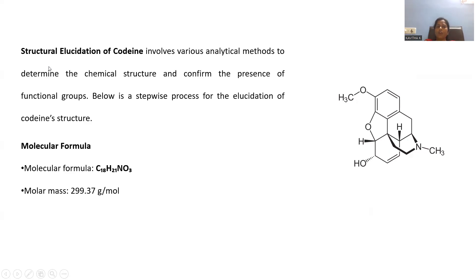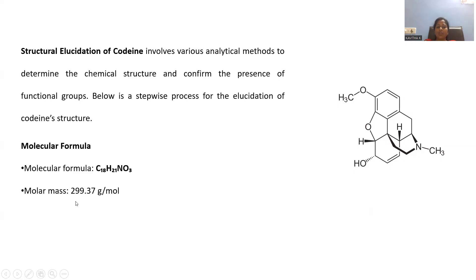Let's go with structural elucidation of codeine. Structural elucidation means whenever we extract raw material from a plant, we don't know what we extracted, so we go for analysis step-by-step using analytical tools to identify the chemical structure. Various analytical methods are used to determine the chemical structure and confirm the presence of various functional groups. By spectral or elemental analysis, the molecular formula is identified as C18H21NO3, and the molar mass is 299.37 grams per mole.